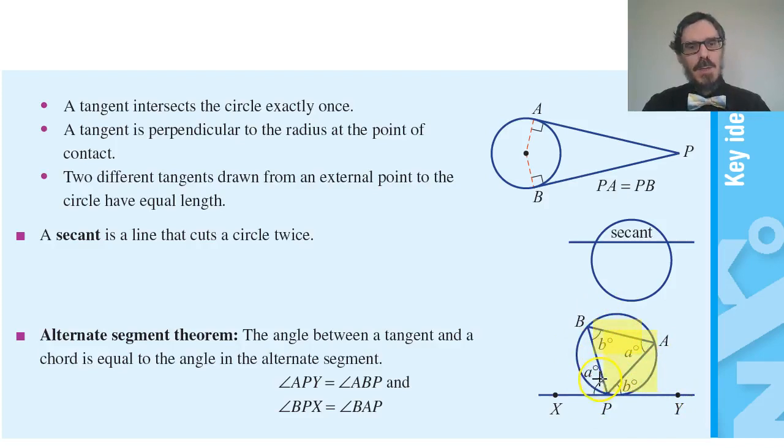So this angle between the tangent and the chord is equal to the angle subtended in the other half of the circle. I shouldn't say half, should I? The other part of the circle.